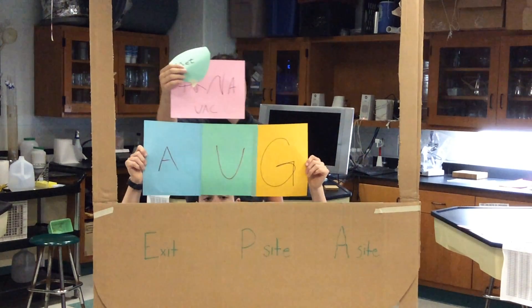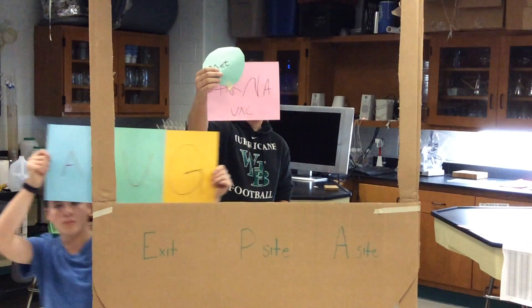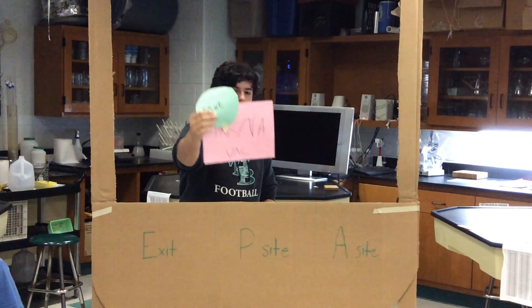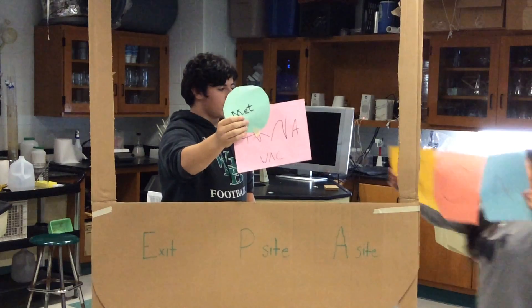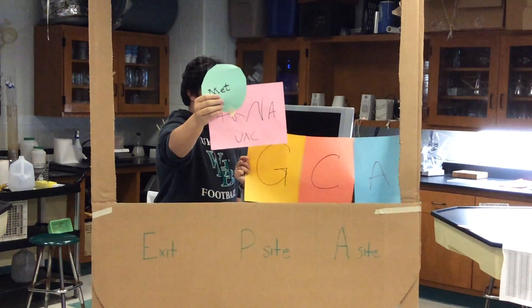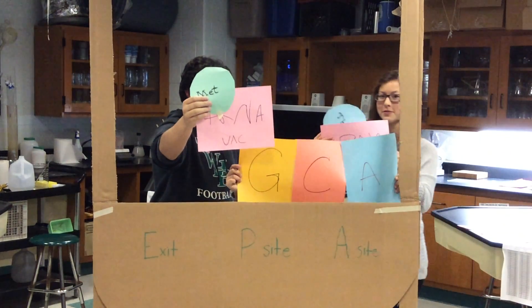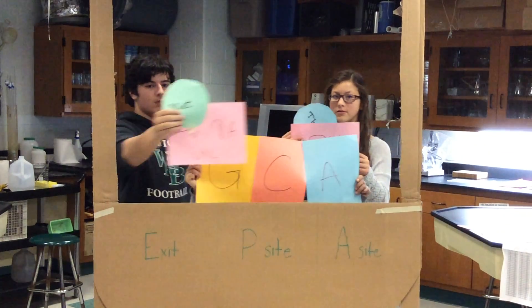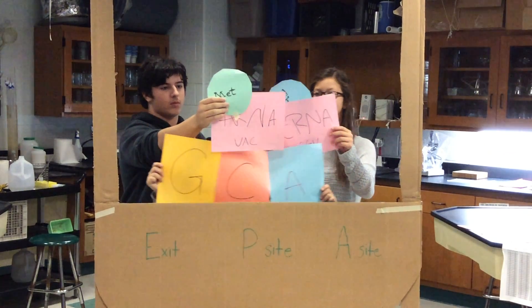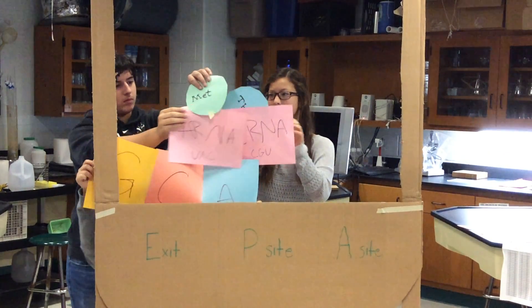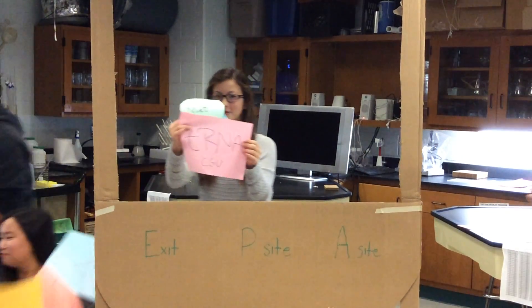Subsequent transfer RNAs with bound amino acids first enter the ribosome at the A site. The complementary matching of three nucleotides of the transfer RNA, called the anticodon, and three nucleotides on the messenger RNA, called the codon, ensure the correct sequence of amino acids.